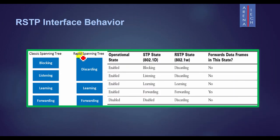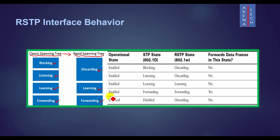Let's look at the difference between Rapid Spanning Tree and classic Spanning Tree. Take a look at the table. Remember the port states of Spanning Tree: we have blocking, listening, learning, and forwarding. This is the first difference between STP and RSTP. In Rapid Spanning Tree, there are only three port states: discarding, learning, and forwarding. RSTP removes the need for the listening state and reduces the time required for the learning state by actively discovering the network's new state. The discarding state combines the blocking and listening port states.